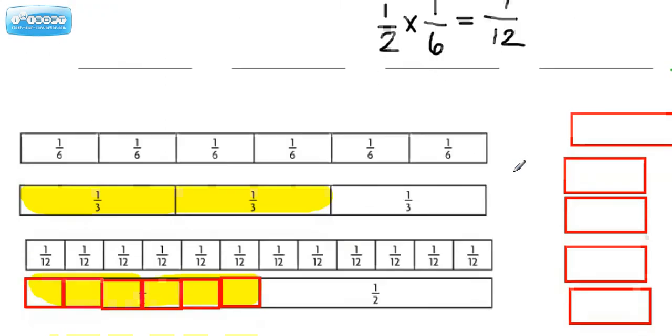So that kind of matches the idea that one of these red boxes is equal to 1/12. And if I kind of slide this over, you can see that it is. Now keep in mind, we have 6 of these in a half, and each red box is equal to 1/12, which is the answer.